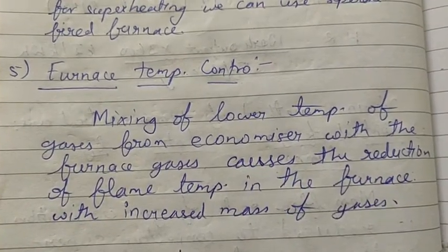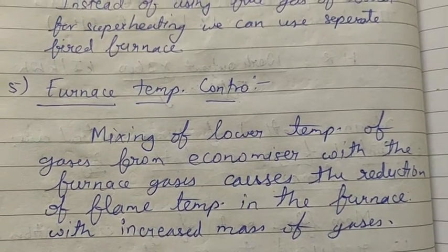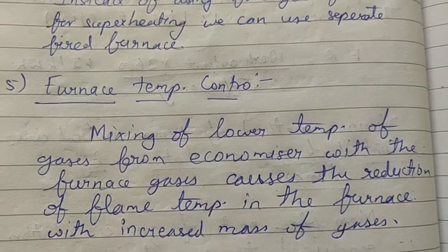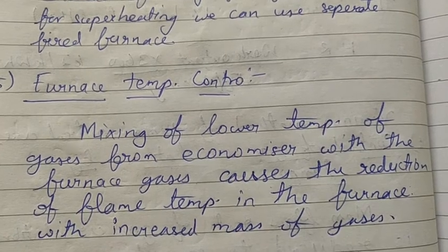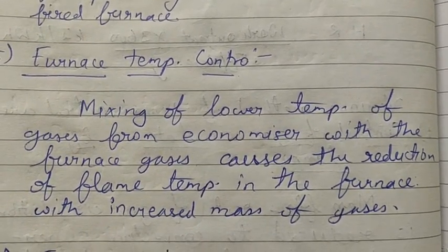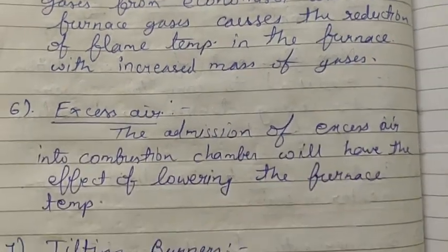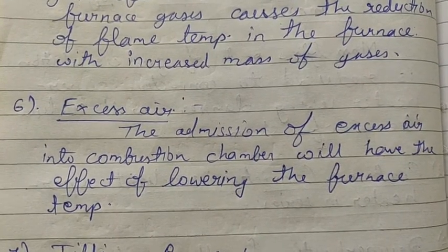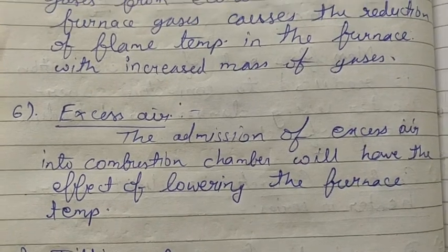Another method involves furnace temperature control by mixing lower temperature gases from the economizer. Lower temperature gas from the economizer reduces the heat available in the furnace. Additionally, admission of excess air reduces the combustion rate, which in turn reduces the furnace temperature.